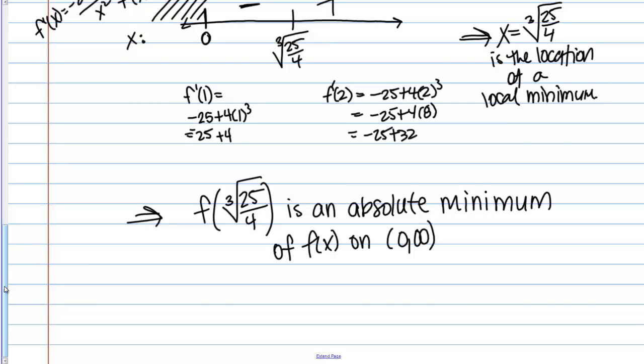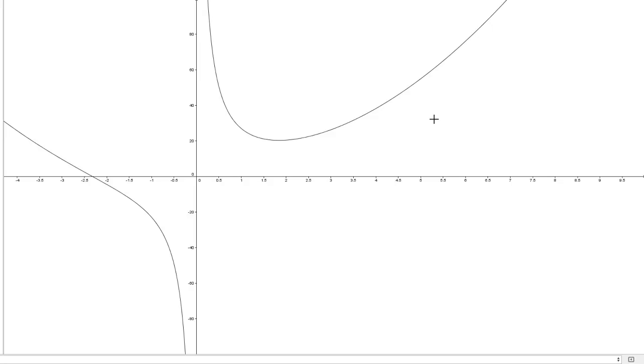So f of this value, you could plug that into your calculator and evaluate what it is. I'm just not going to do that to save a few minutes here. But whatever that value is, is an absolute minimum value of the function on this open interval. If I can just very quickly show you the graph. So we're just looking, we're not looking at this, we're just looking at values greater than zero. So I have a vertical asymptote here at zero, and then it comes down. And we see here, somewhere in this general area, we have that local min, which we see in this case is an absolute min, like the theorem told us it would be.